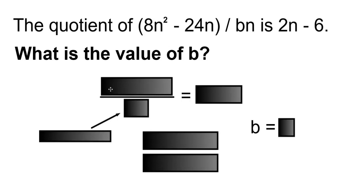Start by writing 8n² - 24n divided by bn, and 'is' means equals, 2n - 6.